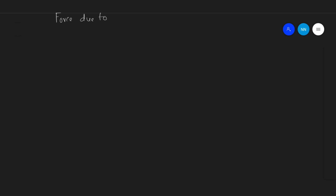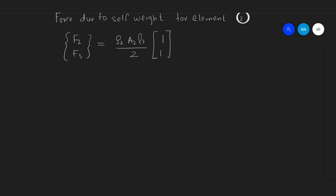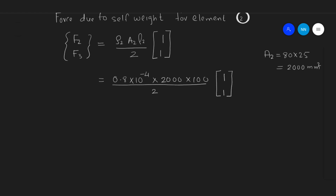Let's find the force due to self-weight of element number 2, which consists of nodes 2 and 3. The force matrix [F2, F3] equals rho2*A2*L2 divided by 2, times [1, 1]. The weight density is 0.8 × 10⁻⁴, and the area of cross-section is 80 (width) into 25 (thickness), giving 2000 mm². Substituting the values: 0.8 × 10⁻⁴ into 2000 into 100 divided by 2, times [1, 1], which yields the matrix [8, 8] Newton.